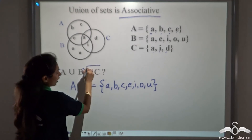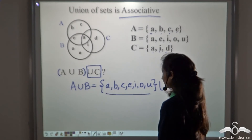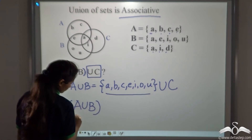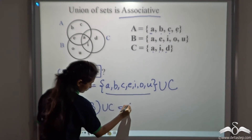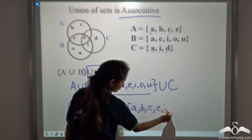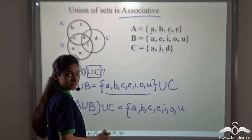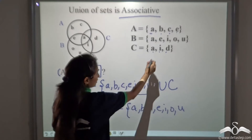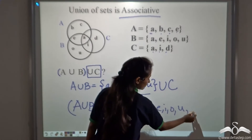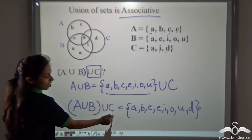So we get A union B as {A, B, C, E, I, O, U}. Now we have to do union of C with this set. We copy this set and then write those elements of C which are not already there. A is already present, I is already present, but D is not present — so we add D. So we get (A union B) union C as {A, B, C, E, I, O, U, D}.